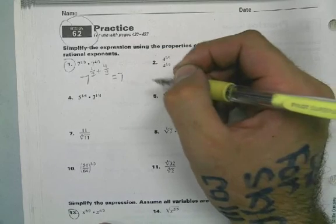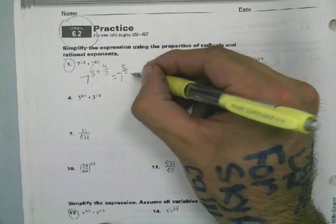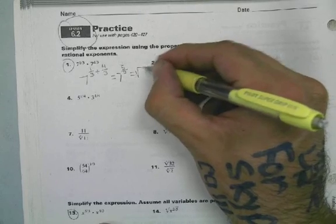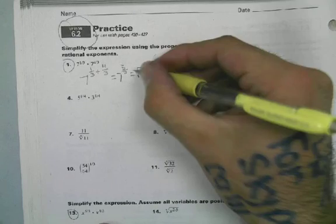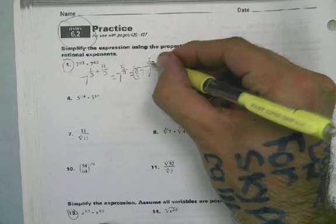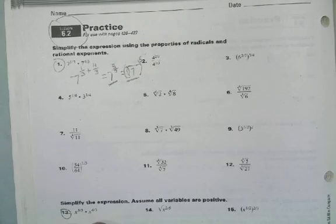7^(5/3), which we could even say equals the cube root of 7 to the fifth. However you want to answer it, this answer is okay and this answer is okay.